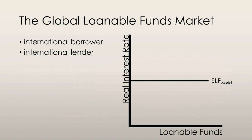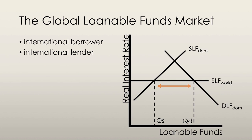An international borrower is a country in which the demand for loanable funds is greater than the supply of loanable funds — keeping in mind that we have a world supply of loanable funds in this market as well. The interest rate is held at the intersection between the domestic demand for loanable funds and the world supply of loanable funds. At this real interest rate, the domestic supply of loanable funds is much less, and the difference — indicated by the orange arrow — is how much is borrowed by that country.